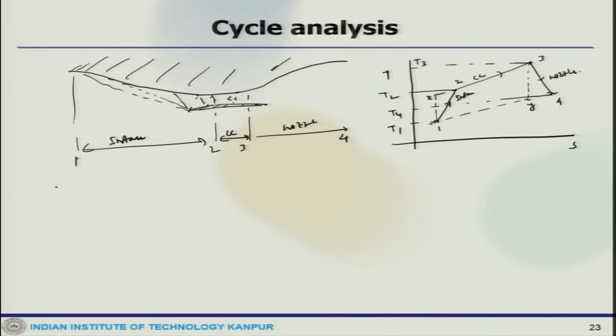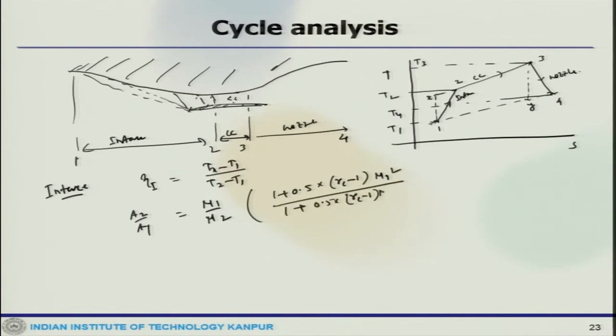Now, we look at the intake first, intake module. What will happen? Because of the shock, there are losses. Intake isentropic efficiency would be Tx minus T1 by T2 minus T1. The area ratio would be M1 by M2, 1 plus 0.5 into gamma_C minus 1 M1 square, divided by 0.5 into gamma_C plus 1 raised to 2 gamma_C minus 1.